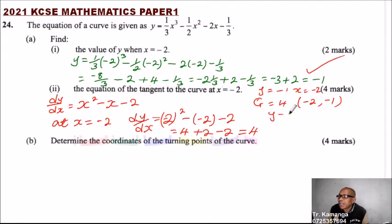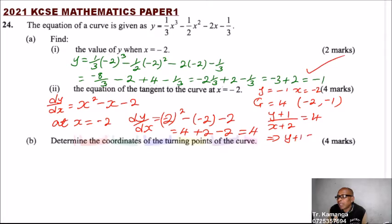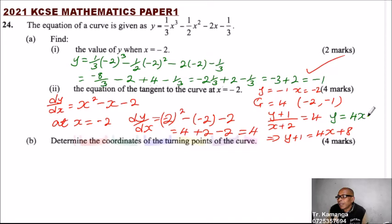So we say: y minus minus 1, that gives positive 1, divided by x minus minus 2, that gives positive 2, equals 4. This implies that y plus 1 equals 4x plus 8, since 2 times 4 is 8. So y equals 4x plus 7, since 8 minus 1 is 7. That is the equation of the tangent, and you will be able to get 4 marks.